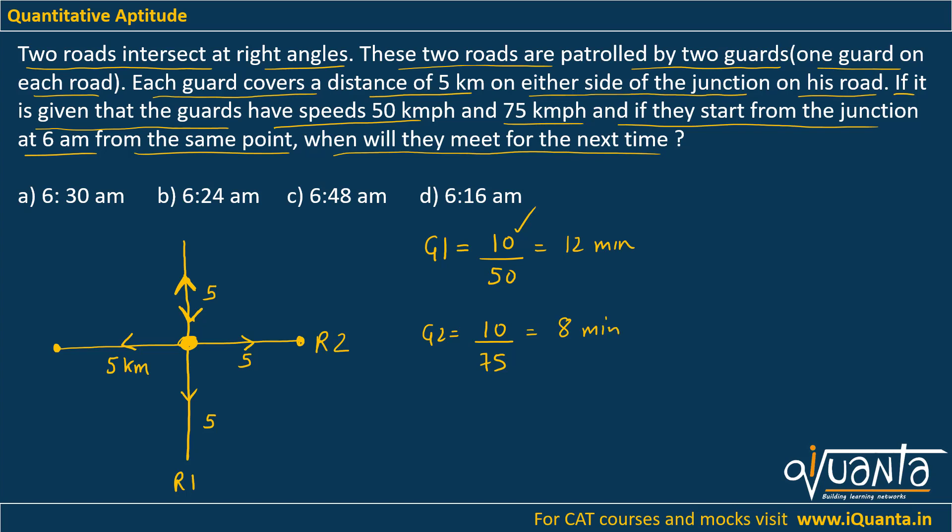So guard one is coming to the junction every 12 minutes. Guard two is coming to the junction every 8 minutes. So when will they together be at the junction? At the LCM of these times, 8 and 12, which is nothing but 24 minutes. So at an interval of 24 minutes, every 24 minutes, they will meet at this point.